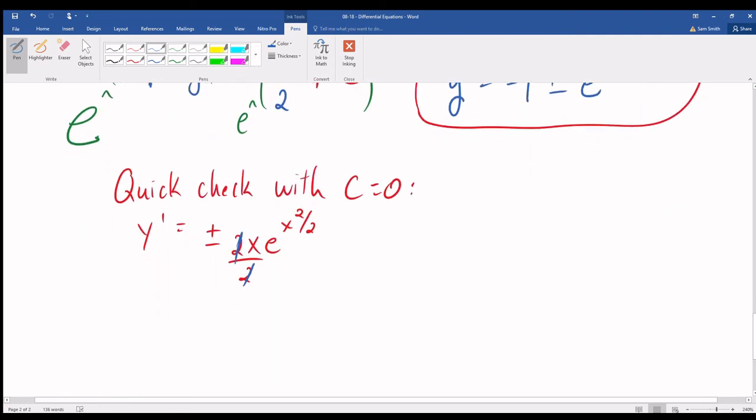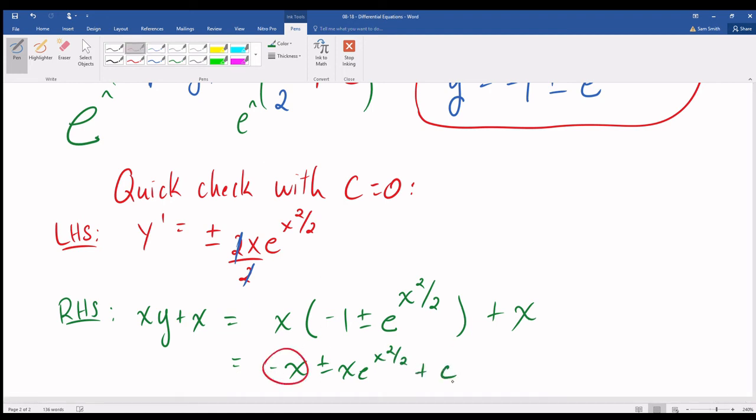Now, let's compare that with what we get on the other side. This is the left-hand side of the differential equation. The right-hand side was supposed to be x times y plus x. So, that would be x times the quantity negative 1 plus or minus e to the x squared over 2 plus x. After distributing and after simplifying, that's an x, I apologize. Then it turns out that yes, indeed, the left-hand side and the right-hand side of this differential equation work out to be the same. So, we were able to find general format of the solutions to this differential equation because it was separable.